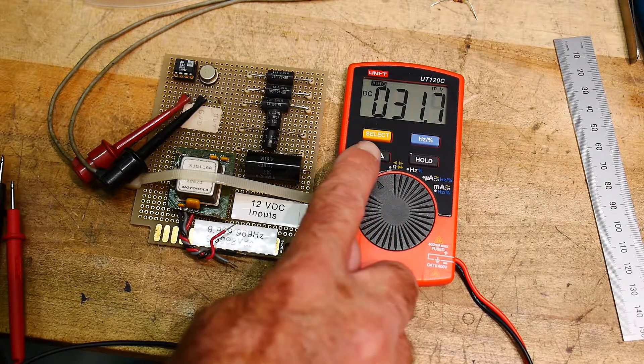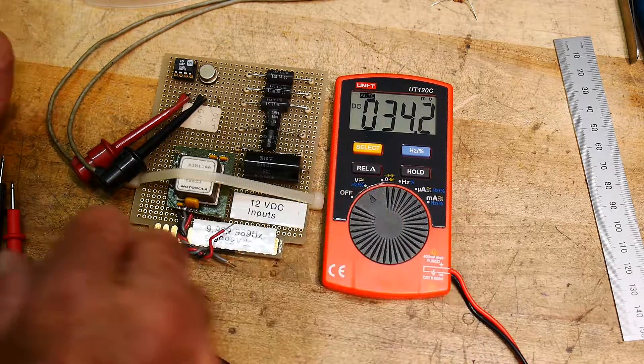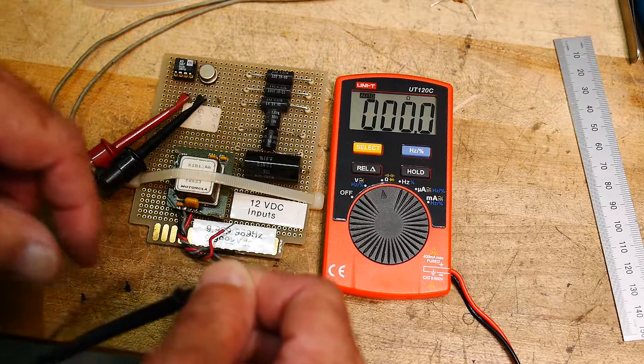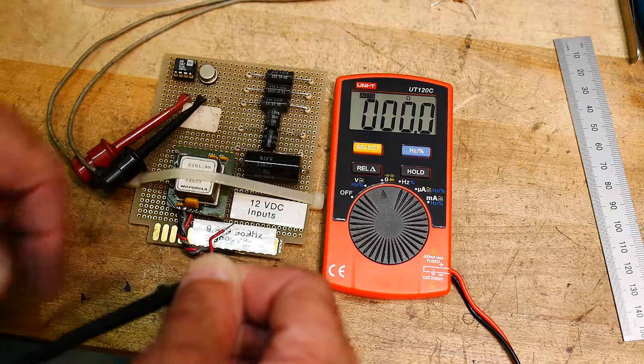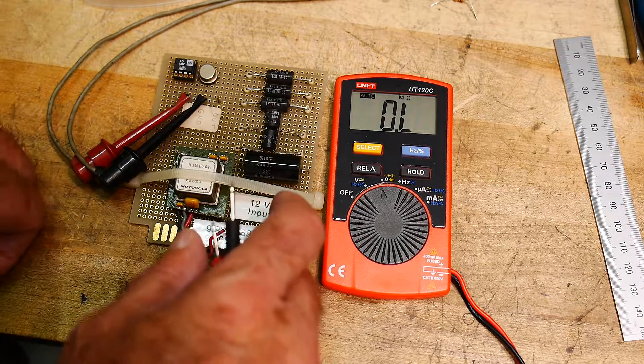There's a hold function, so it can hold it. There's a relative function if you want to zero it out, so you can put it on ohms and zero it. Well, it's already zero, so don't need to hit the relative, but it'll do relative.